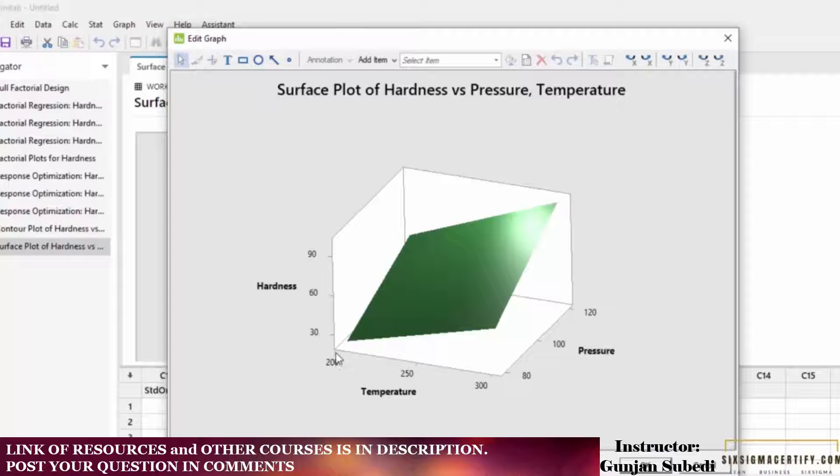For example, I have the range of temperature between 200 to 300 degrees centigrade, the range of pressure between 80 to 120 and range of hardness from 30 to 90. So I can understand the different effects of temperature and pressure over the hardness.